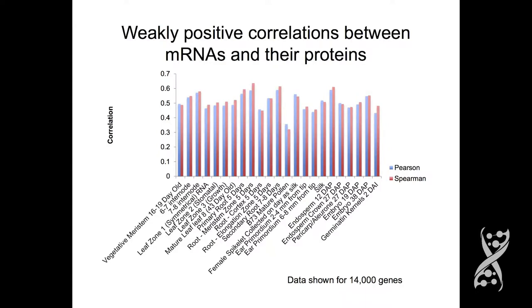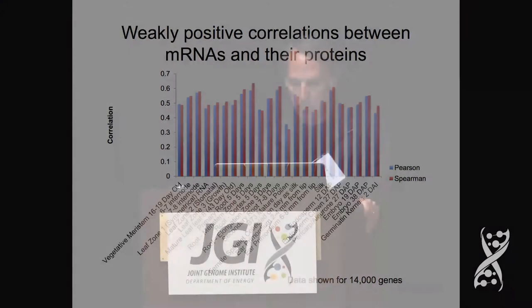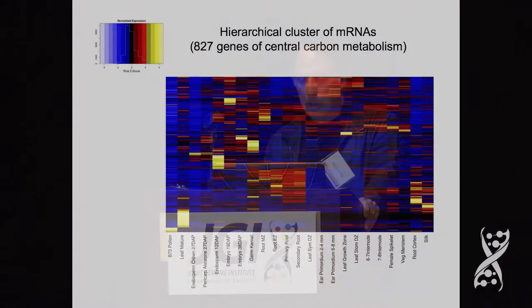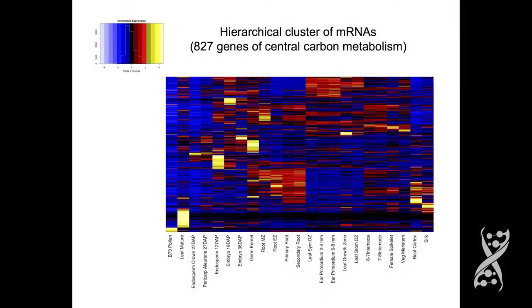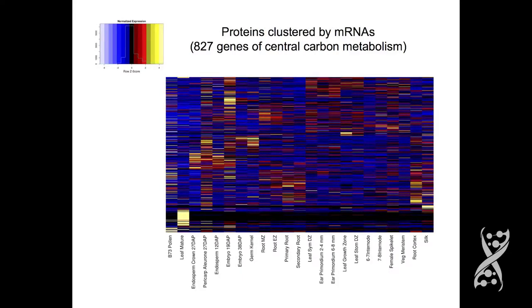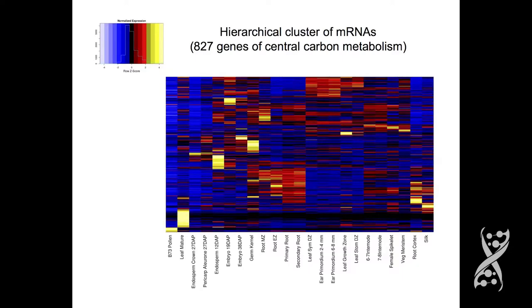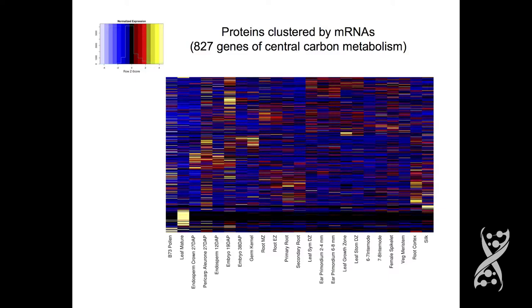On the correlation between RNA and proteins, that paper by Yates had a Spearman correlation of 0.45. Here we show both Spearman and Pearson, and for all these different tissues the global correlations between RNA and protein are bouncing around between 0.4 and 0.6, with pollen being an outlier with a lower relationship. Showing a set of genes for central carbon metabolism clustered by messenger RNA and toggling between RNA and protein levels, you can kind of recognize some clusters in the protein pattern, but not enough to feel confident predicting protein values from RNA values.